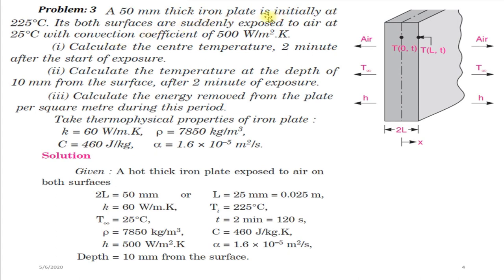Now coming to the third problem: a 50 mm thick iron plate is initially at 225°C. Both surfaces are suddenly exposed to air at 25°C with a convection coefficient of 500 W/m²K. Calculate the central temperature 2 minutes after exposure, the temperature at a depth of 10 mm from the surface after 2 minutes, and the energy removed from the plate per square meter. Thermal properties of iron: K = 60 W/mK, ρ = 7850 kg/m³, C = 460 J/kgK, α = 1.6×10⁻⁵ m²/s.